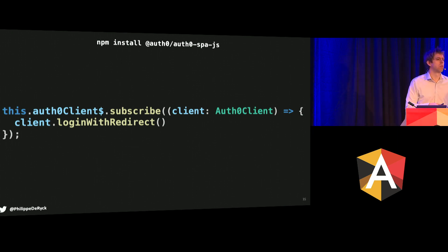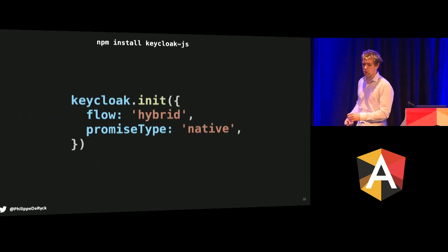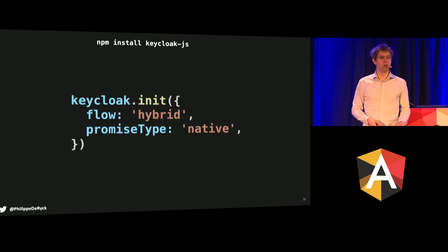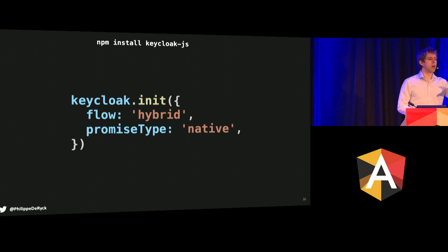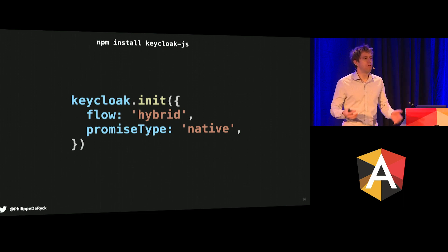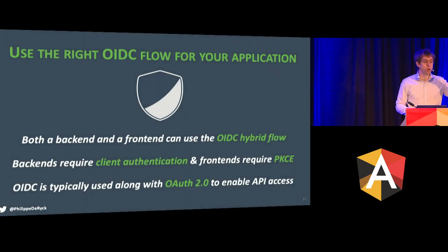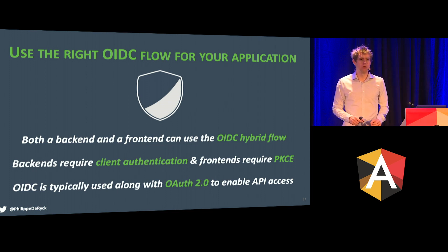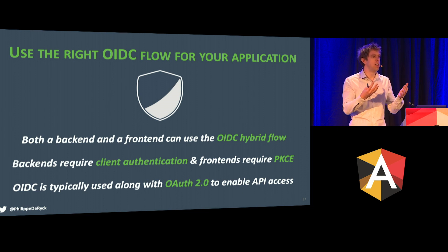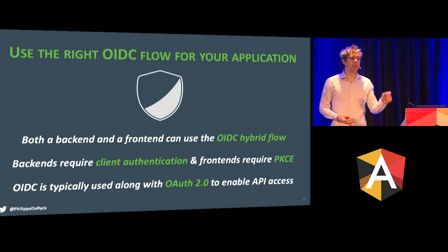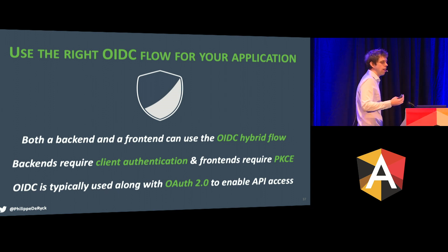And if you don't like Auth0 because it's commercial and you want open-source, Keycloak is an open-source identity provider you can run in your own organization. Many organizations are doing that, and they have a JavaScript adapter you call in a similar way. All of this complexity is hidden in these adapters — they resolve the tokens, exchange the code for tokens, store them in your application, even attach them to outgoing requests. Rely on those libraries. That's the takeaway: use OIDC, use the right flow, and rely on libraries to hide all the complexity, because it helps you implement things in a secure way.